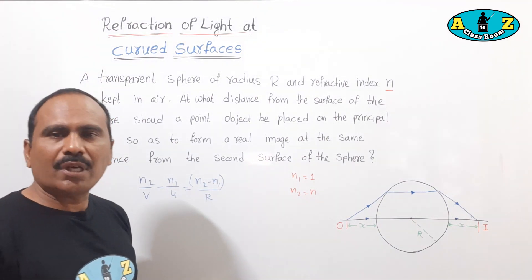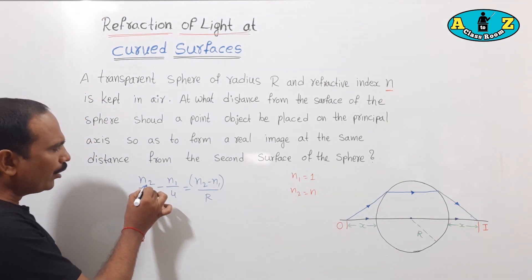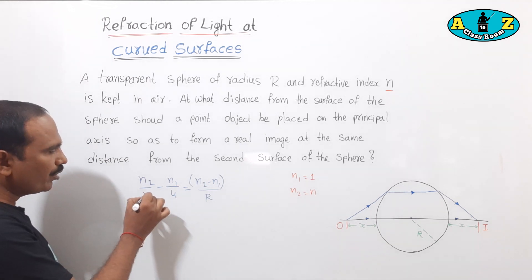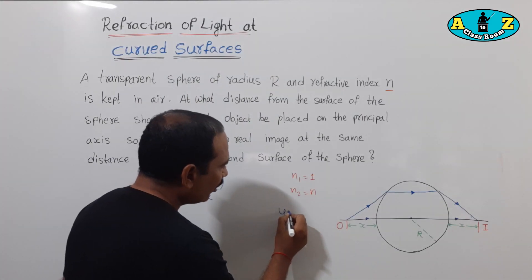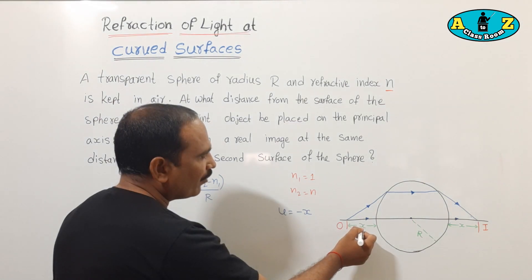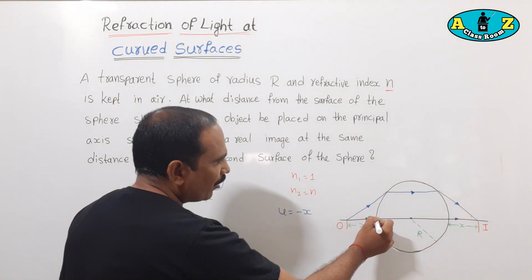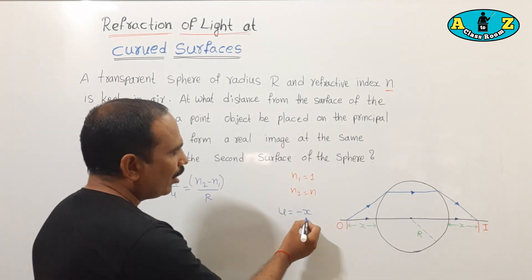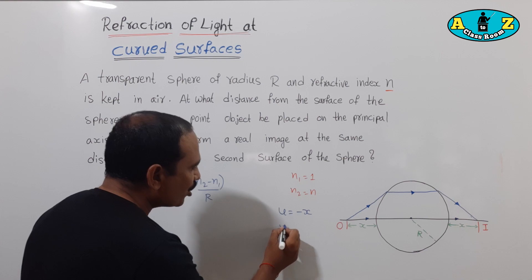This is the curved surface formula. For this curved surface, n2 over v minus n1 over u equals (n2 minus n1) over R, where R is the radius of curvature. Here v equals image distance and u equals object distance. Using sign conventions, since we measure from the pole opposite to the incident ray direction, object distance u equals minus x.